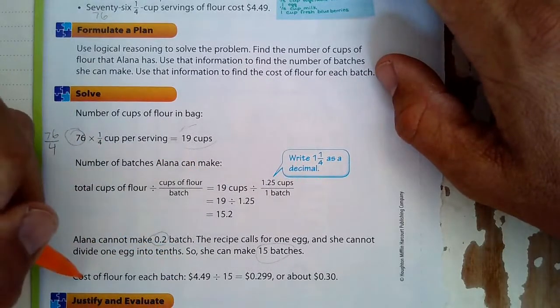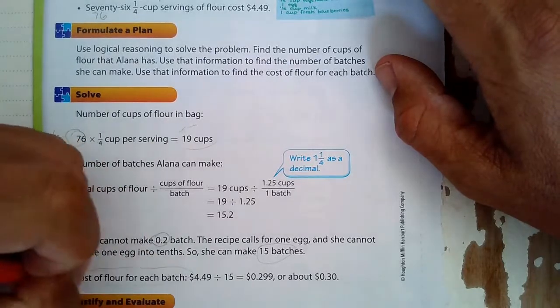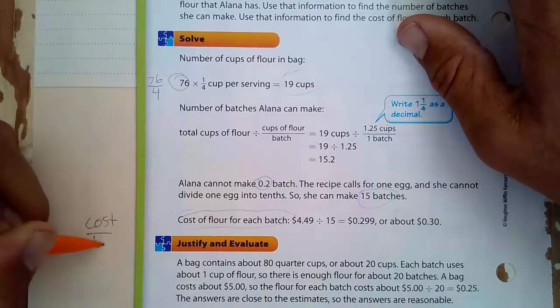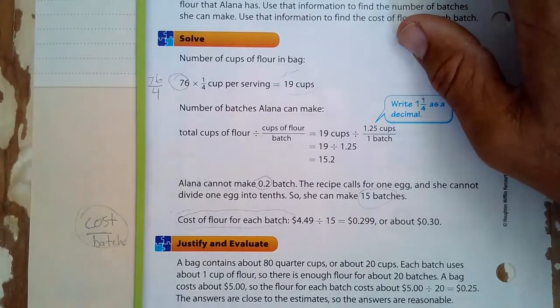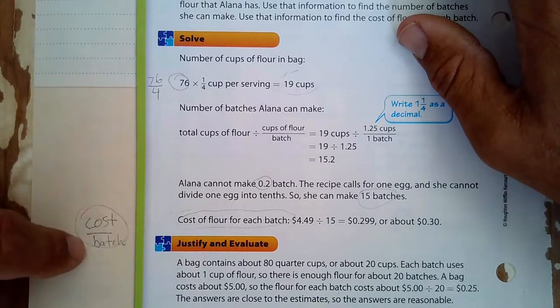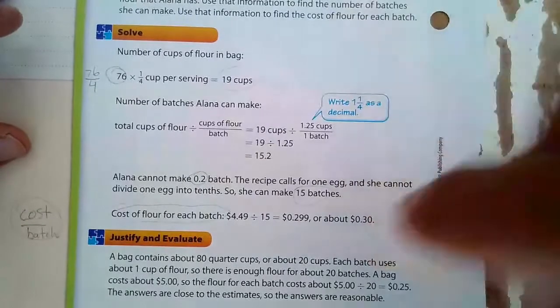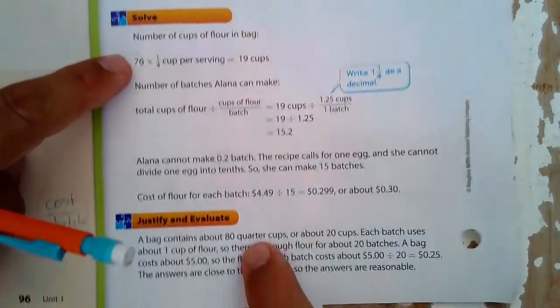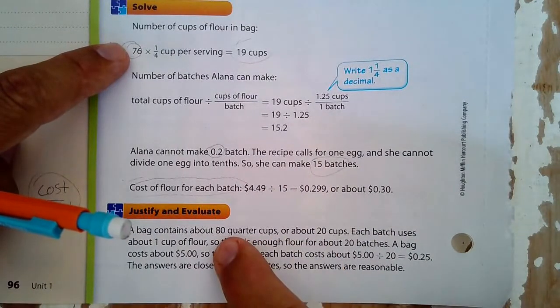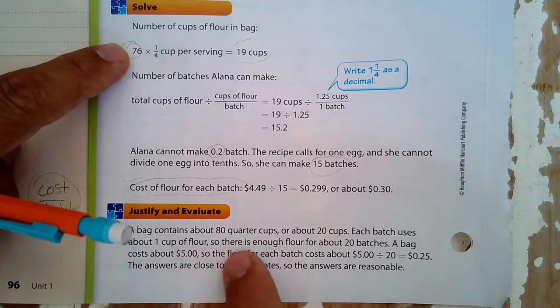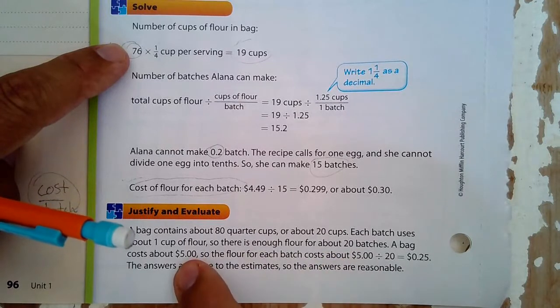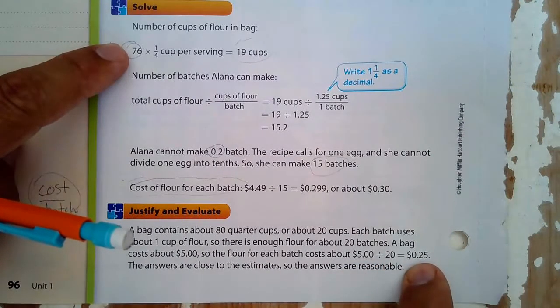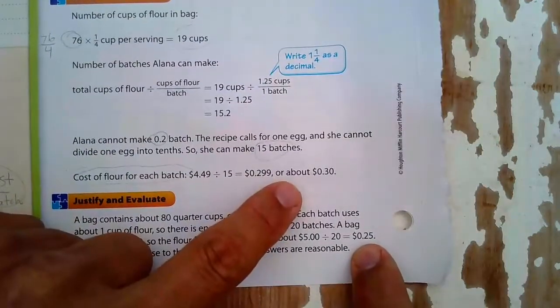Now we have the cost per flour. And when I see this cost of flour for each batch, in my brain I'm thinking cost per batch. So that tells me I'm dividing the $4.49 divided by the 15. So that's 30 cents. And does this make sense? A bag contains about 80 quarter cups - 76 is close to 80. If you divide that by 4, that's 20 cups. Each batch uses one cup of flour, so there's enough flour for about 20 batches. A bag costs five bucks. So the flour of each batch costs $5 divided by the 20, about 25 cents. And we came up with 30 cents, and that sounds like it's about reasonable.